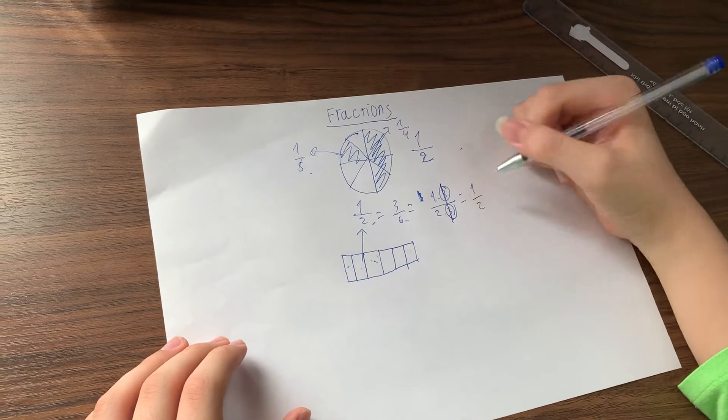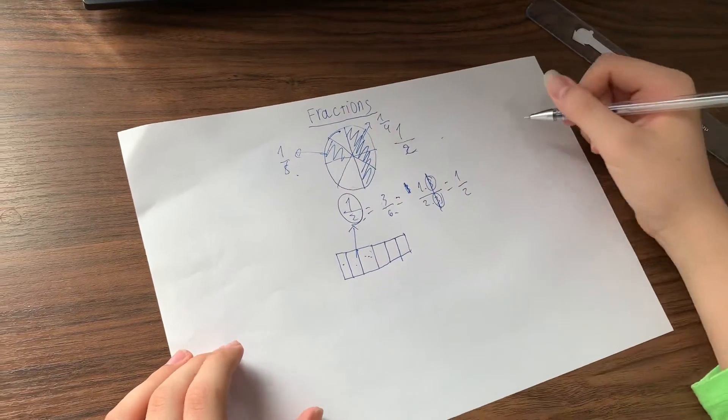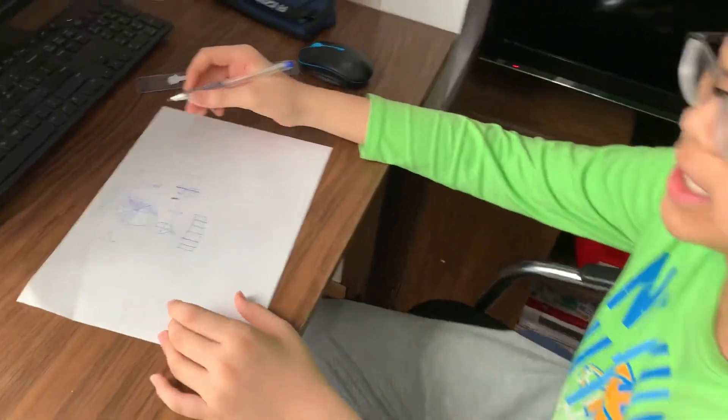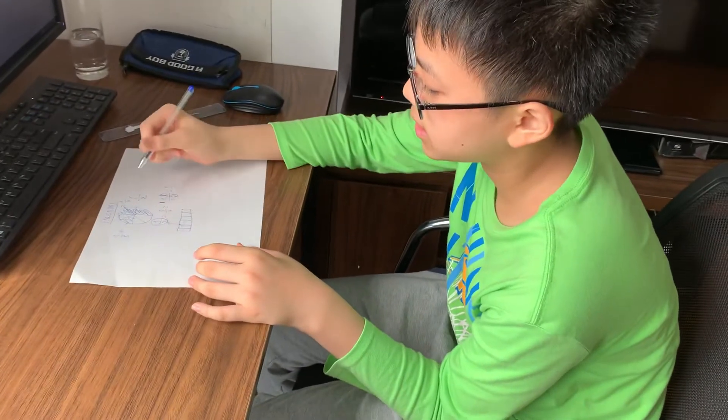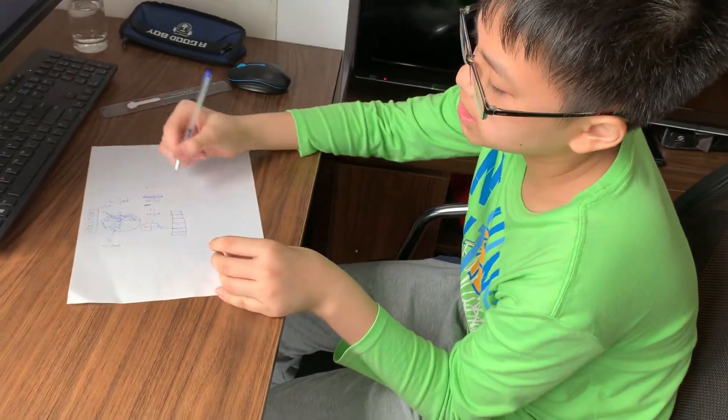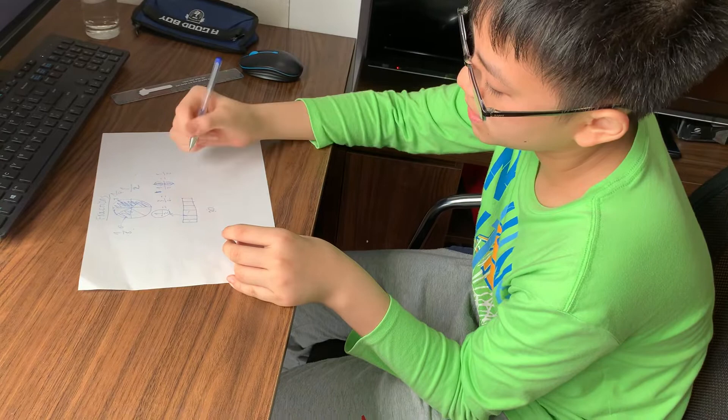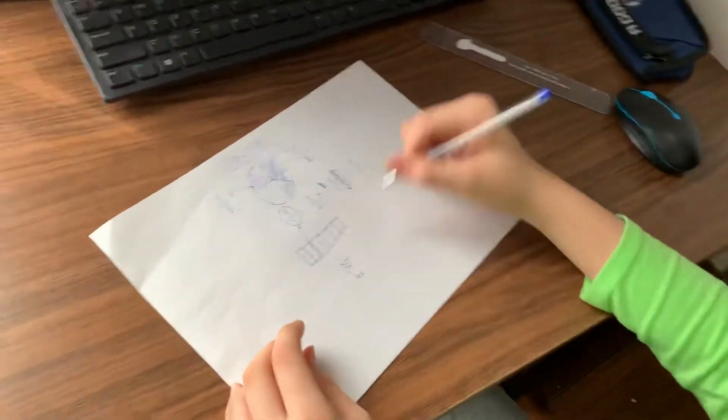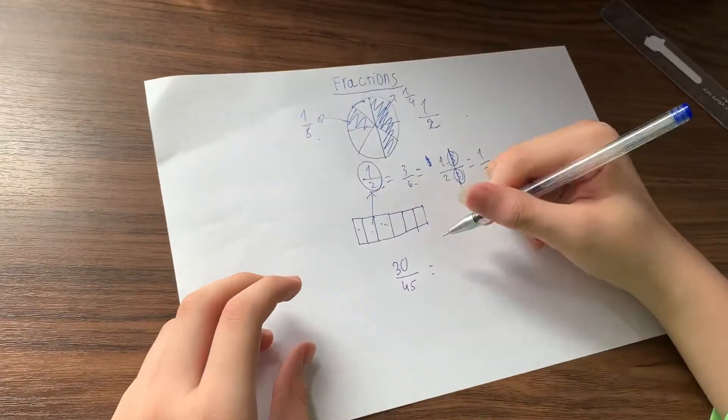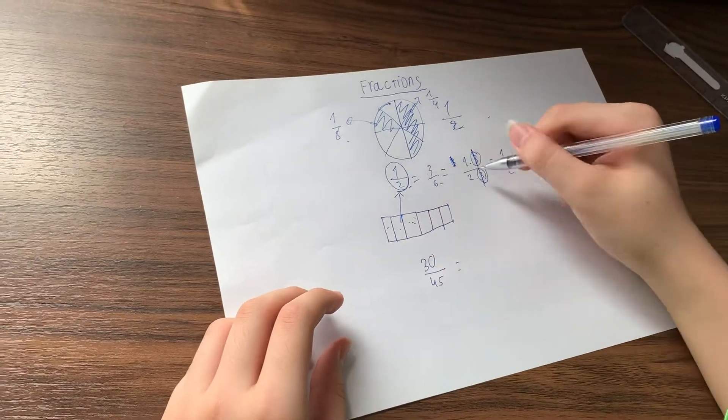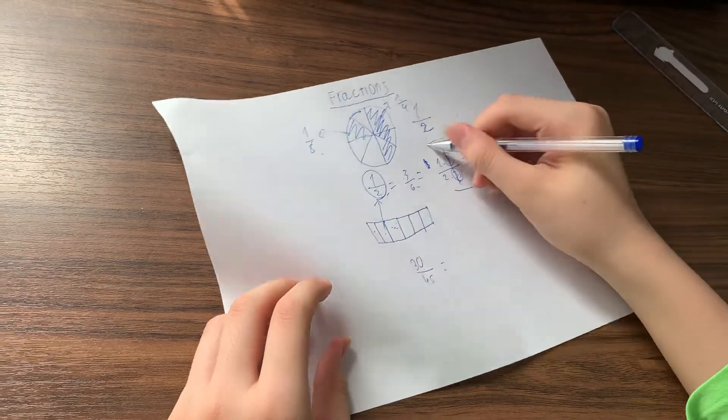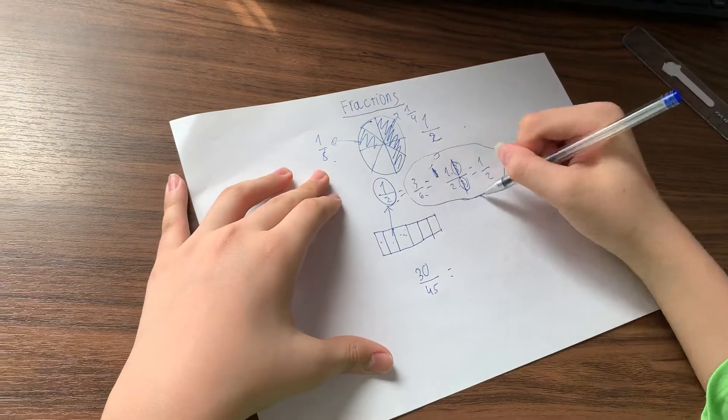And you got the same result here. Now if I do something more complicated. Let me simplify 30 over 45. Now how do you simplify this fraction? You do the same step as this.